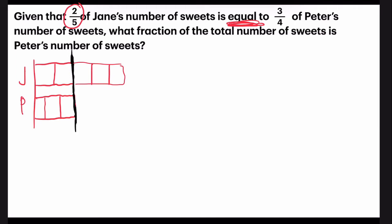And now let's go on to draw Peter. Since Peter has already had three-quarters drawn, that means there will be one-quarter more of Peter's. Okay, now, model drawn.